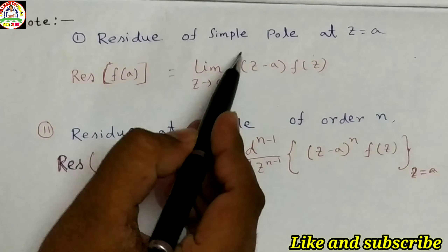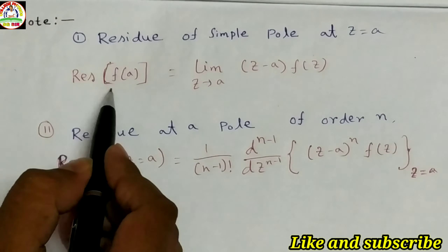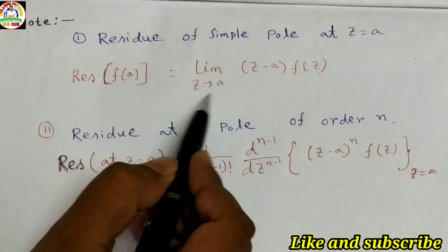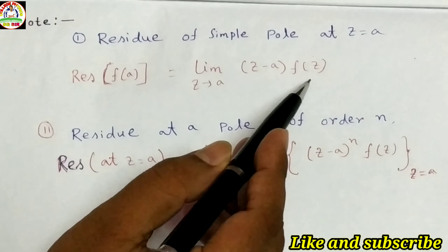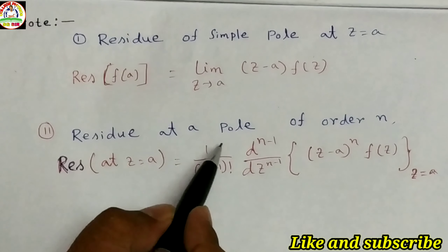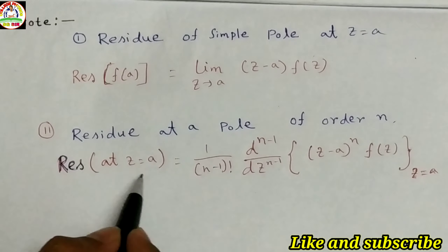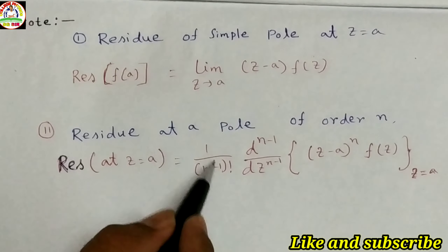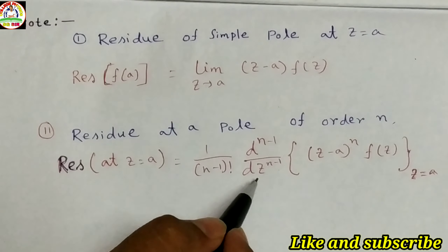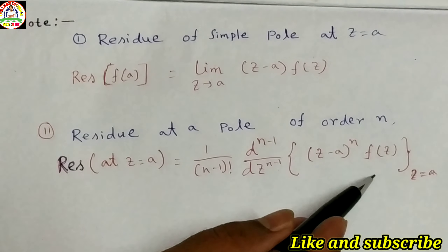Remember: the residue of a simple pole at z = a is Res f(a) = lim(z→a) (z − a)·f(z). The residue at a pole of order n at z = a equals 1/(n−1)! times the (n−1)-th derivative with respect to z of [(z − a)ⁿ · f(z)], evaluated at z = a.